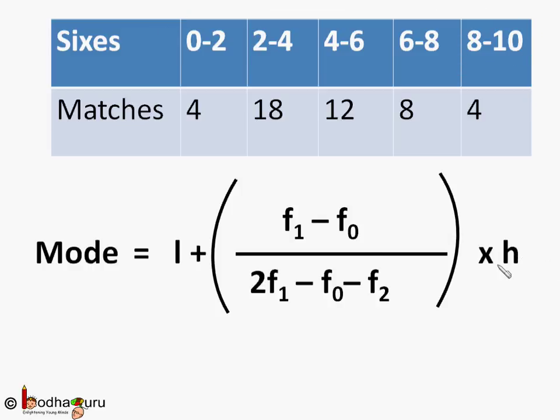F1 equals frequency of the modal class, which is 18 in this example. F0 equals frequency of the class preceding before the modal class, which is equal to 4. F2 is equal to frequency of the class succeeding, that is after the modal class, which is 12 in this example.